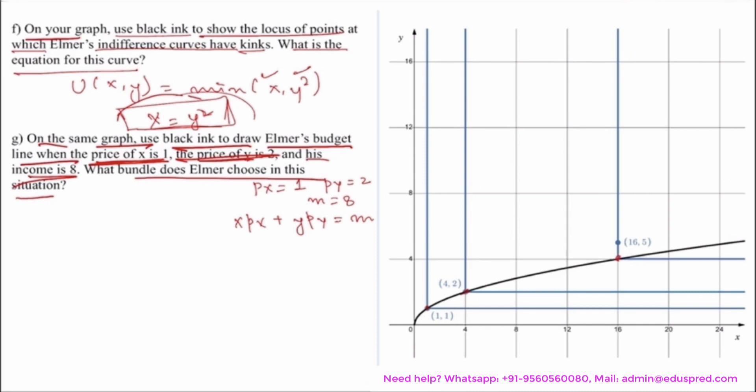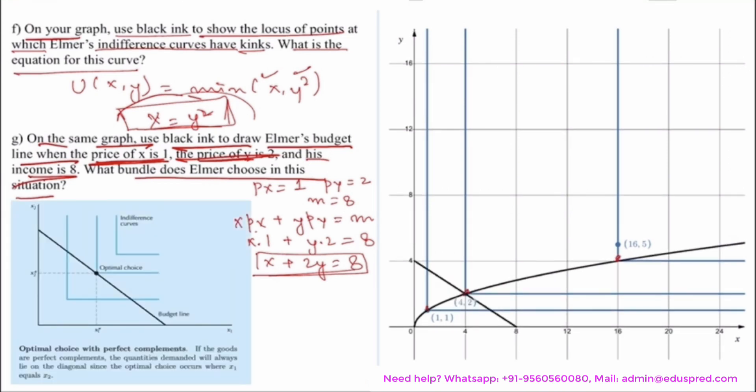Substituting the values of prices and income, I have x multiplied by 1 plus y multiplied by 2 is equal to 8 or x + 2y equals 8. This is my budget equation. Now we have to plot this equation, which would be this black line. Further, the question says what bundle does Elmer choose in this situation?